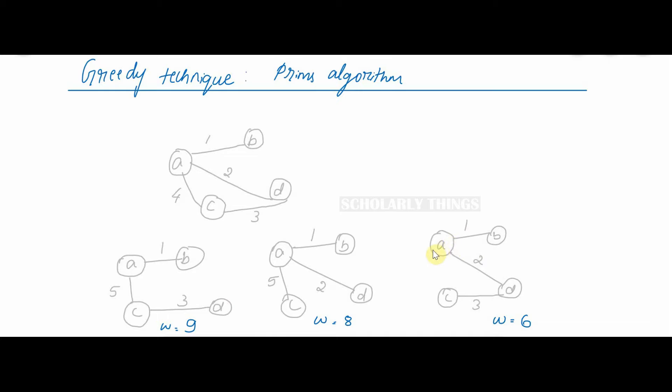Among all the spanning trees, the one which has the minimum total weight is the minimum spanning tree. Here the third spanning tree is the minimum spanning tree.